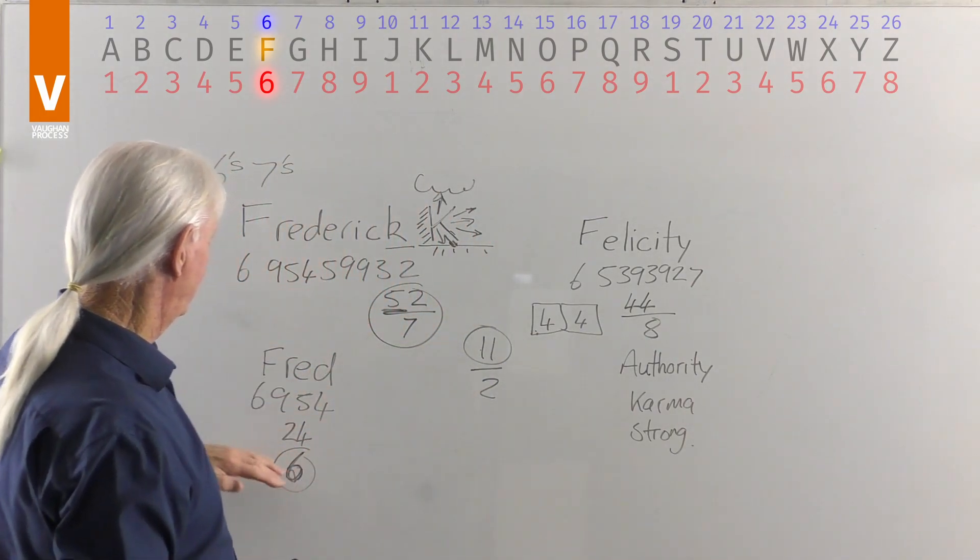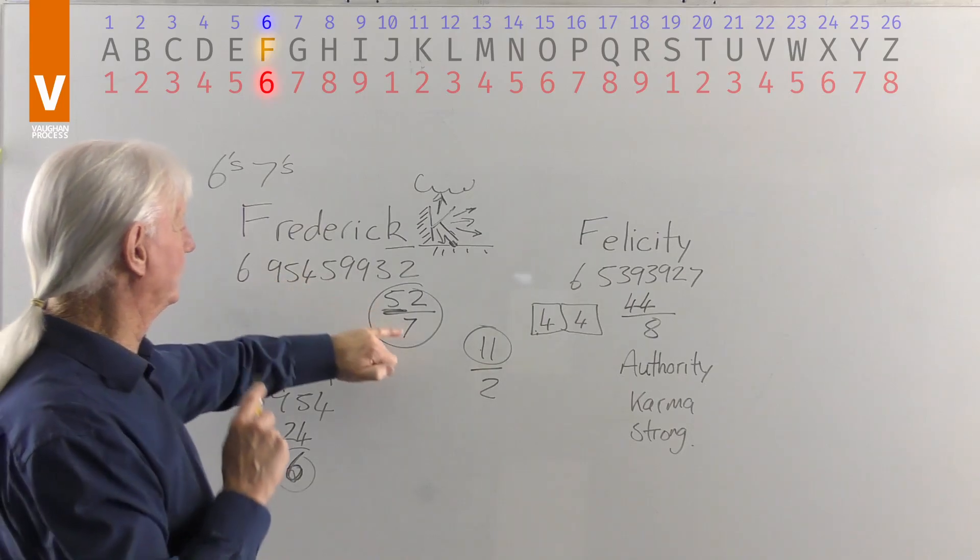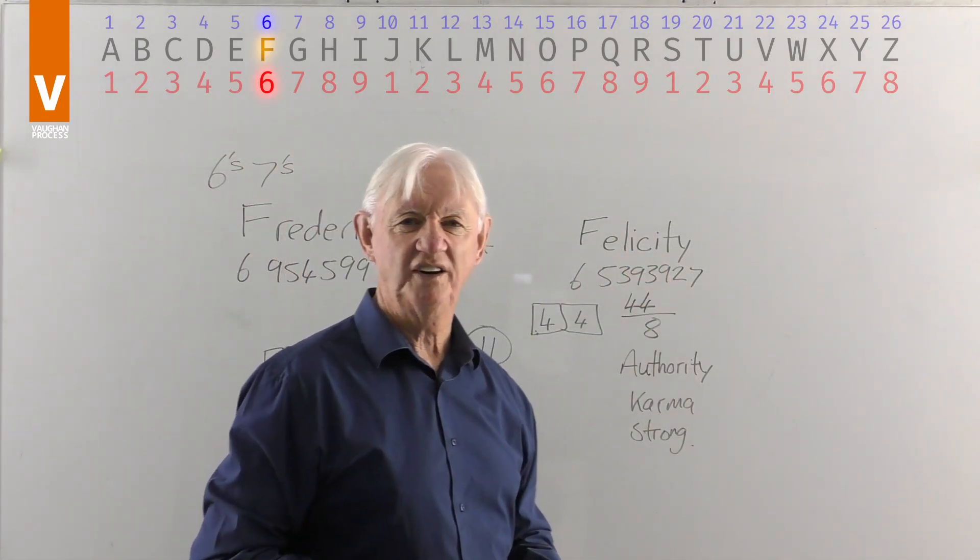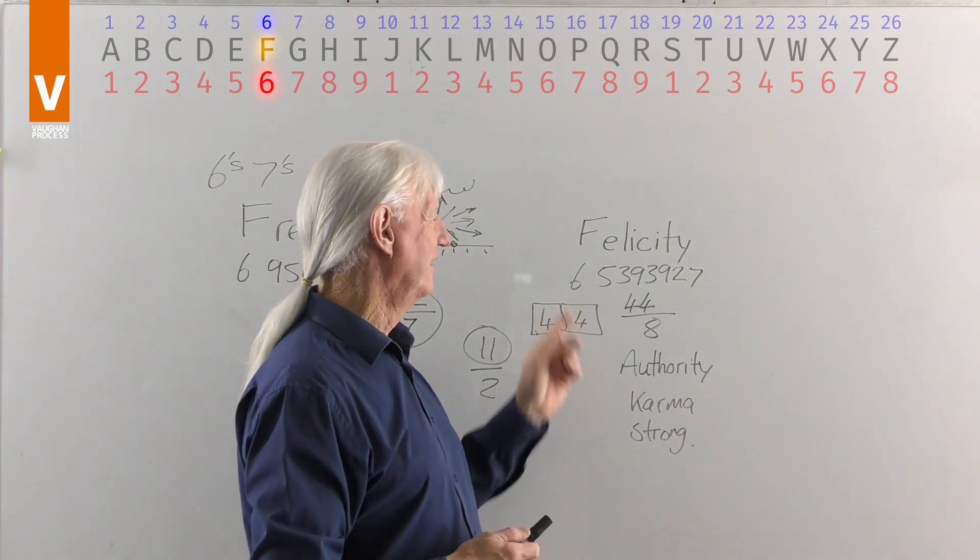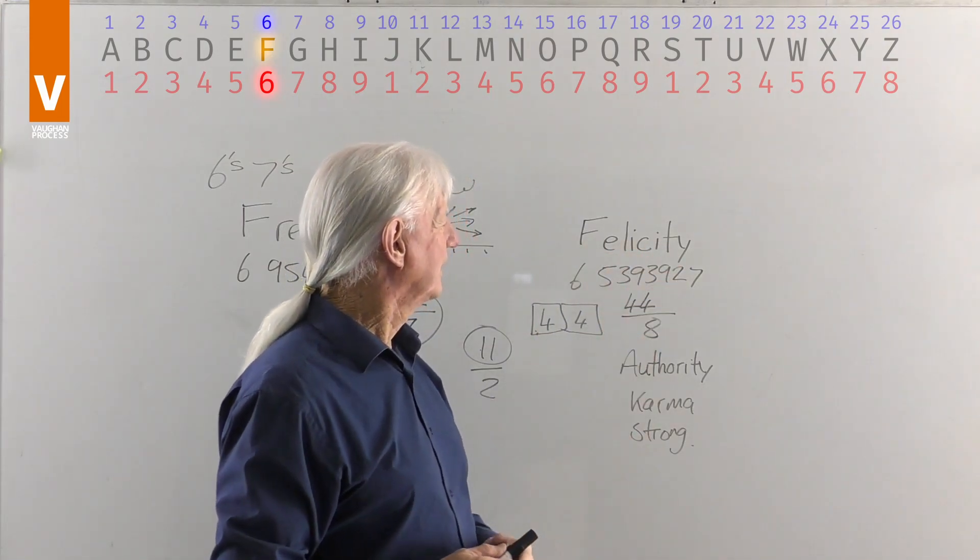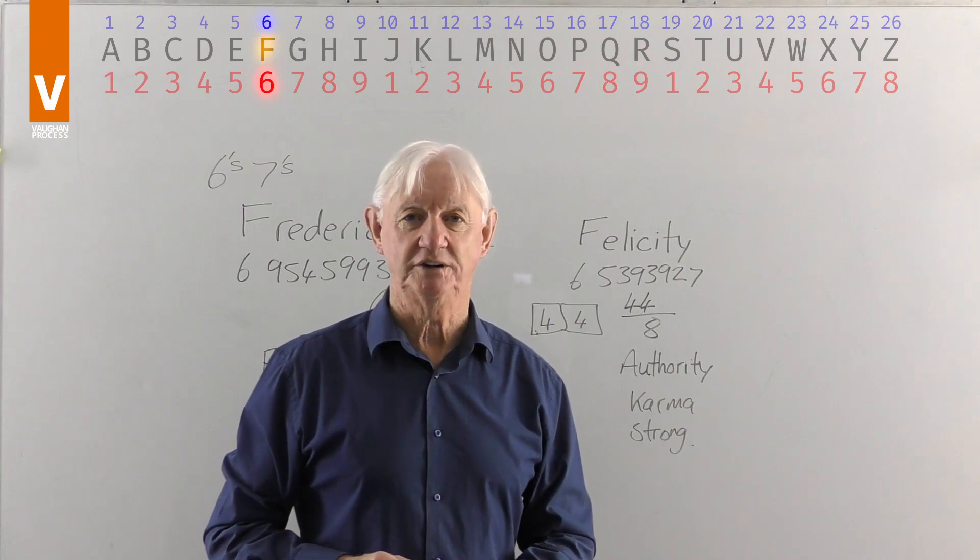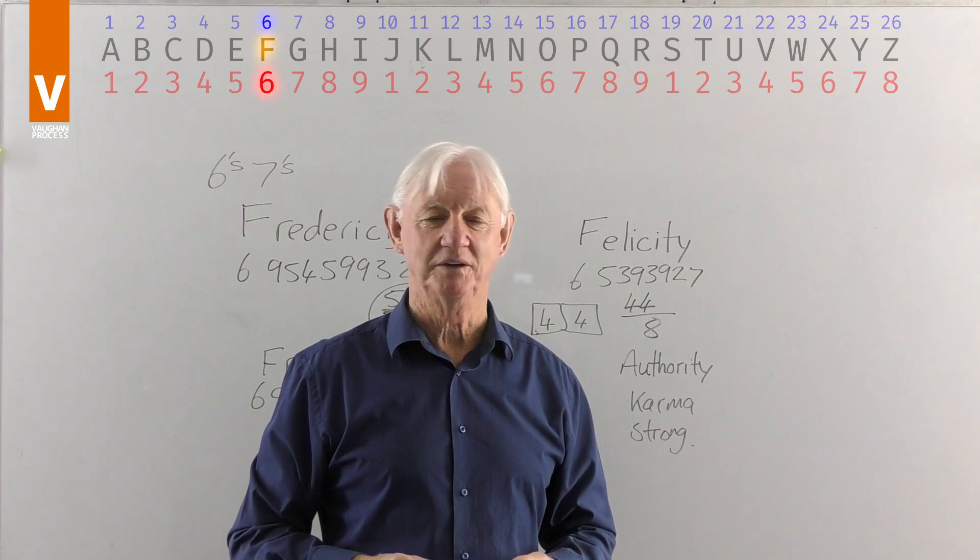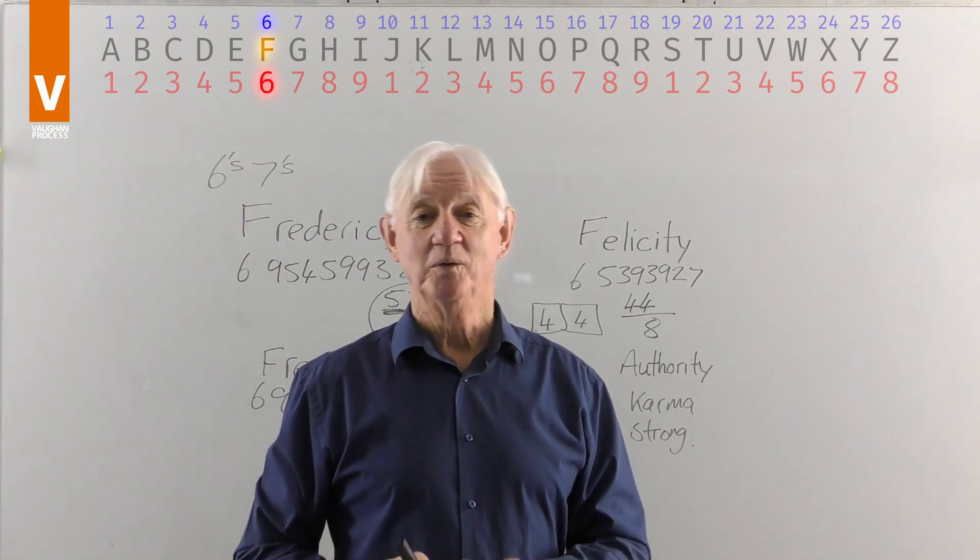Well, here we have Fred which is 6, Frederick which is 7, and Felicity is an 8. But I don't think I can shorten Felicity to Fel, Felic, or Felie. It doesn't matter. Use a person's full name. You're giving them the strength that they deserve from the name given to them at birth. Well, thanks for watching. Click the like button and even subscribe. And as Peter says, everything is in your name.